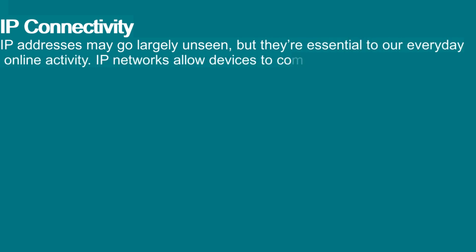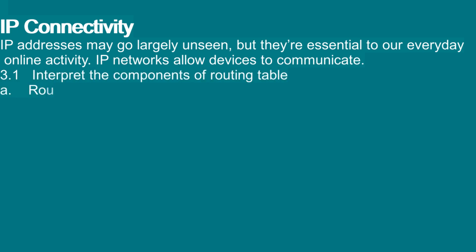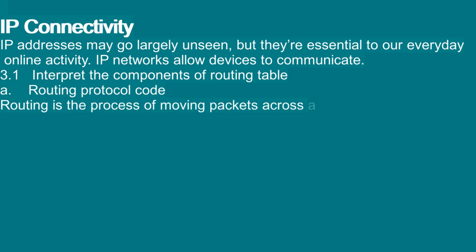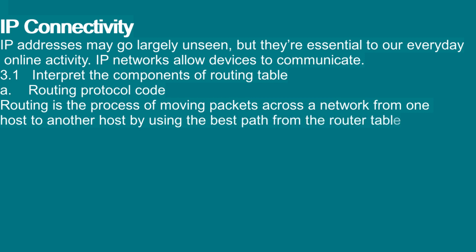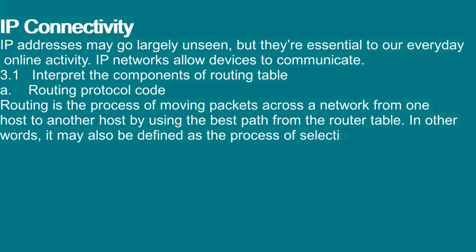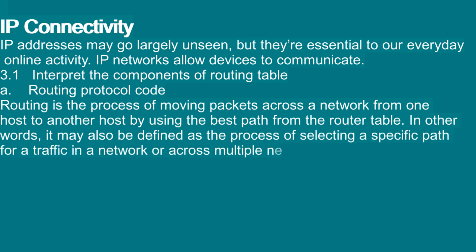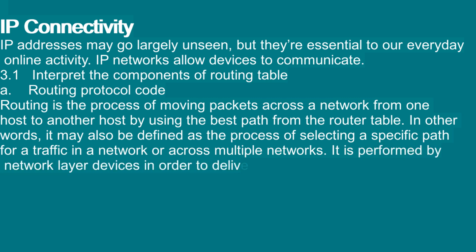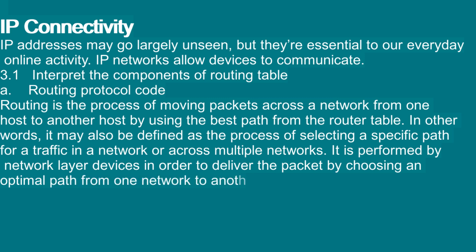3.1 Interpret the components of a routing table. Routing is the process of moving packets across a network from one host to another host by using the best path from the routing table. It may also be defined as the process of selecting a specific path for traffic in a network or across multiple networks. It is performed by network layer devices in order to deliver the packet by choosing an optimal path from one network to another.